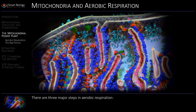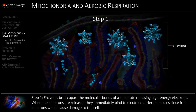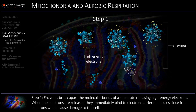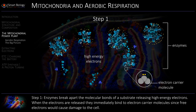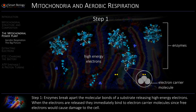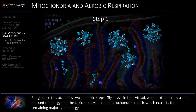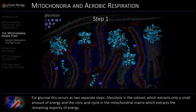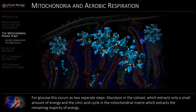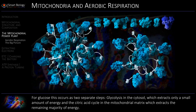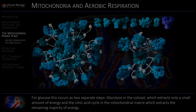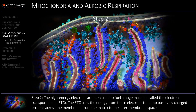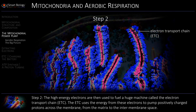There are three major steps in aerobic respiration, releasing high energy electrons. When the electrons are released, they immediately bind to electron carrier molecules, since free electrons would cause damage to the cell. These steps include glycolysis in the cytosol, which extracts only a small amount of energy, and the citric acid cycle in the mitochondrial matrix, which extracts the remaining majority of energy. The high energy electrons are then used to fuel a huge machine called the electron transport chain, or ETC.